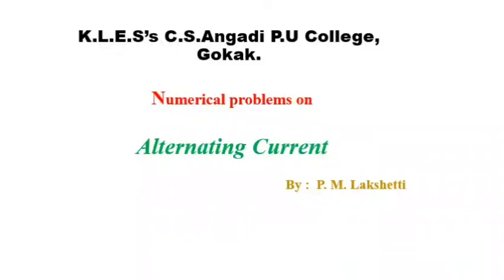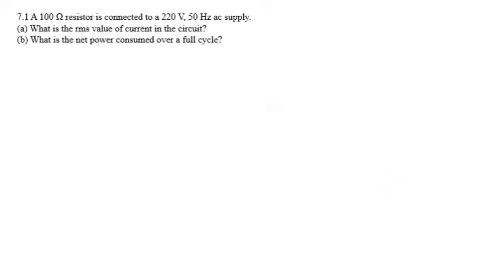Hello students, this is the video class on numerical problems of the topic alternating current. The first question: a 100 ohm resistor is connected to 220 volt and 50 hertz AC supply. What is the RMS value of the current in the circuit?